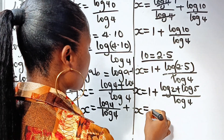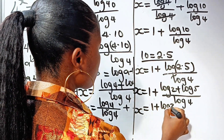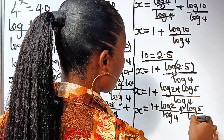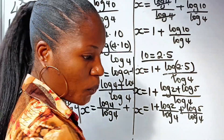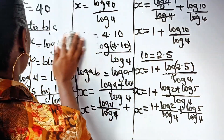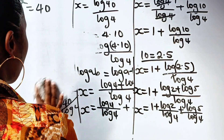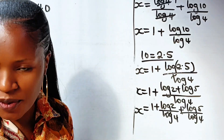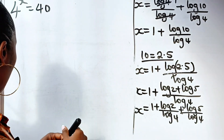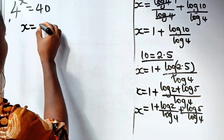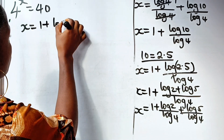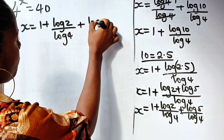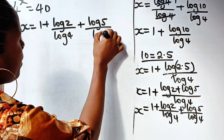So we have x is equal to log 4 plus log 5 divided by log 4. Now recall that log 4 equals log 2 squared, which equals 2 log 2. So we can write x is equal to 1 plus log 2 plus log 5, all divided by 2 log 2.